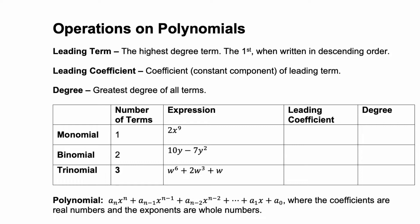First is the leading term. The leading term is the highest degree term when we write it in descending order — we always want the highest exponent first and go down. The leading coefficient is the constant value of that leading term. And the degree is the greatest degree of all terms, or what the largest exponent is.